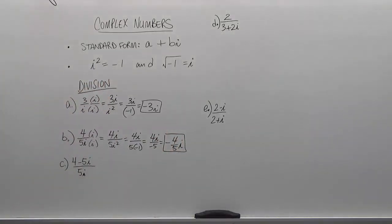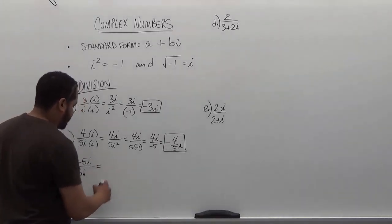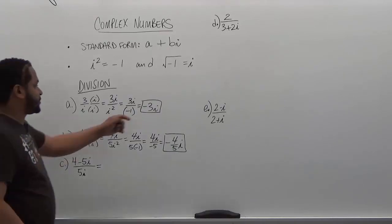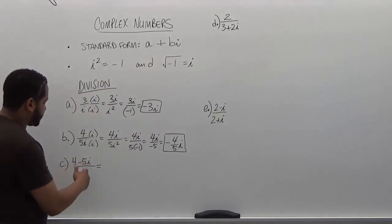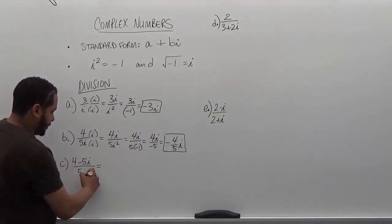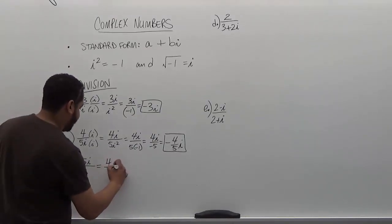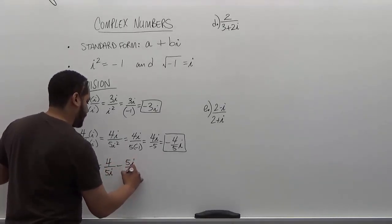Moving on to the next one, we see we have four minus 5i as the numerator, divided by just 5i. We want to get rid of the i in the denominator to rationalize this term and put our solution in standard form. In this one we're going to get two terms, so we'll separate the fractions first. Since we have a monomial in the bottom, it will perfectly divide each term. So we have four over 5i minus 5i over 5i.